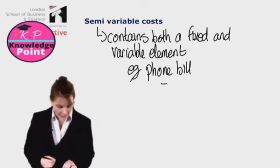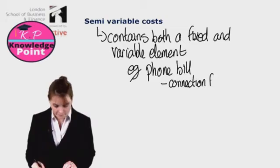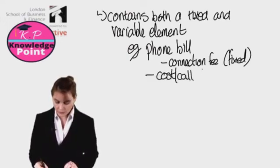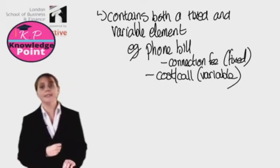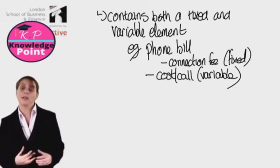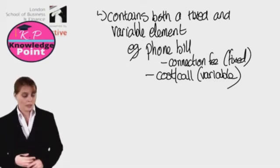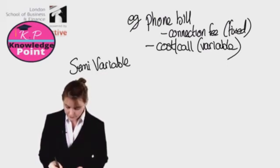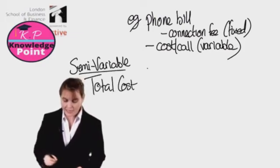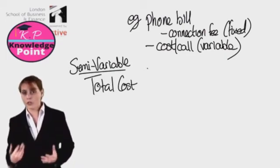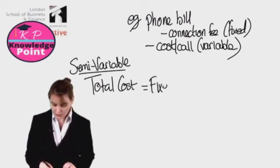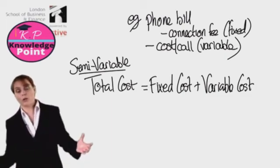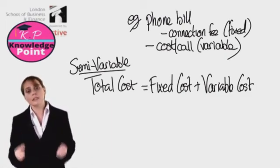So in my phone bill, I can split it out into two elements: the connection fee, which is fixed, and the cost per call, which is a variable cost — it's going to increase or decrease depending on how much I use my phone. Another example of a semi-variable cost is total cost — the total cost for a company. The total cost of any company's operation is equal to the fixed costs plus the variable costs. As total cost contains fixed and variable elements, it is a semi-variable cost.